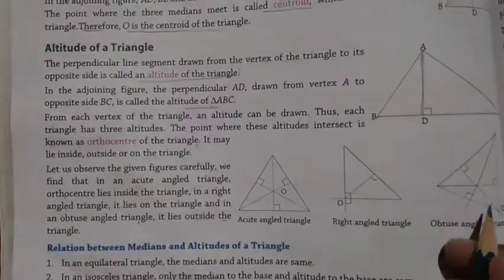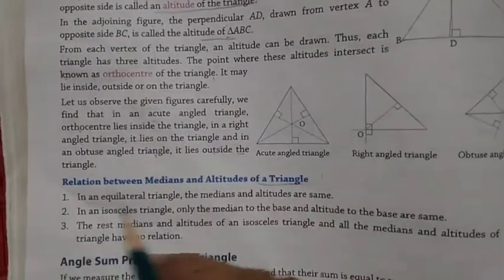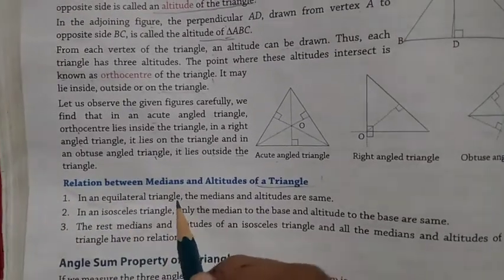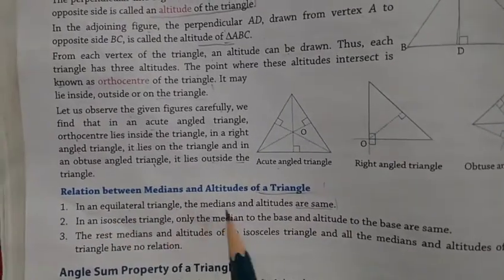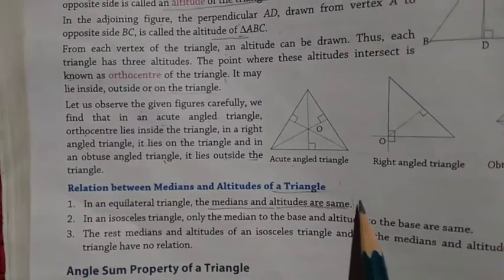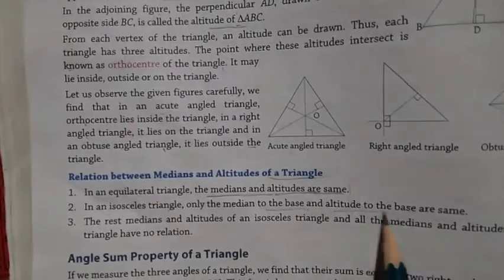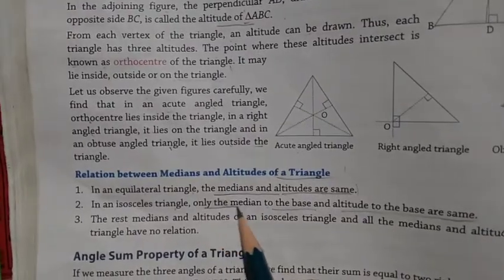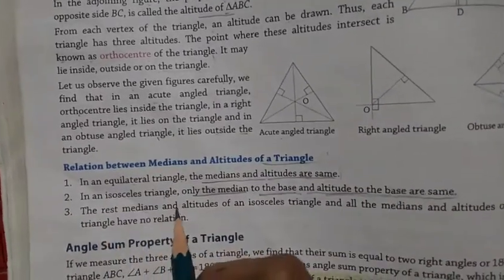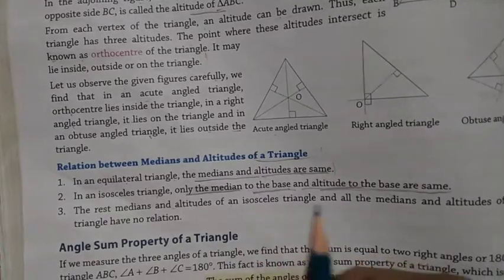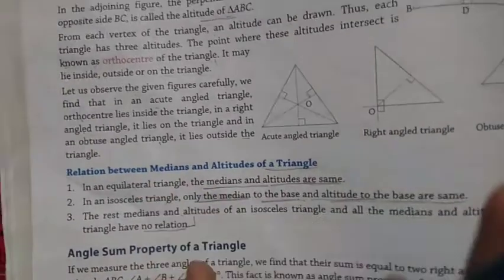In an obtuse-angled triangle, the orthocentre lies outside the triangle. Now we will see the relation between median and altitude. In an equilateral triangle, the median and altitude are the same. In an isosceles triangle, only the median to the base and the altitude to the base are the same. For a scalene triangle, all medians and altitudes have no such relation.